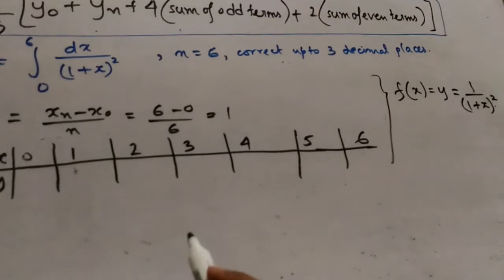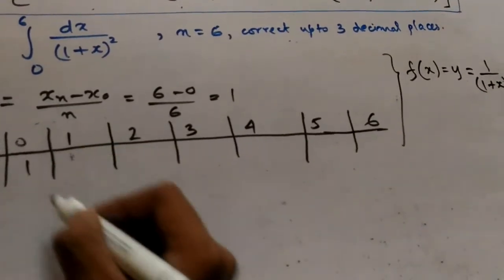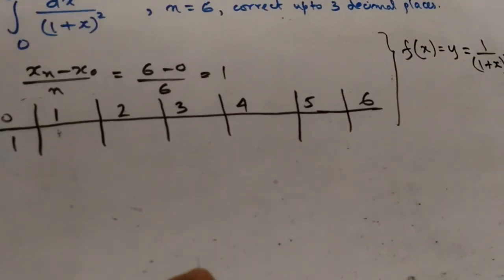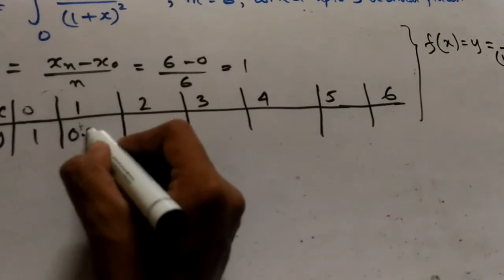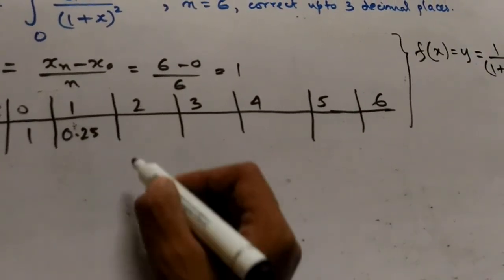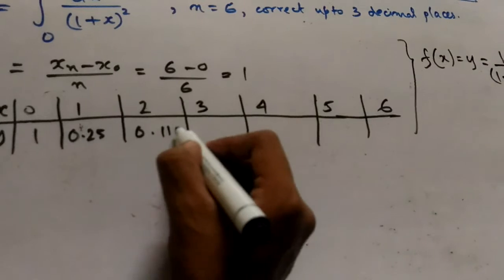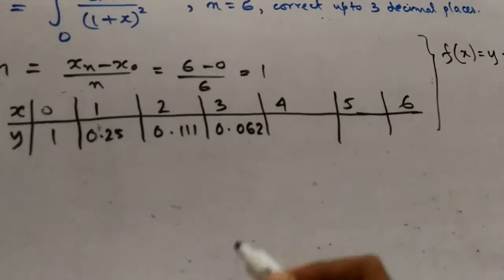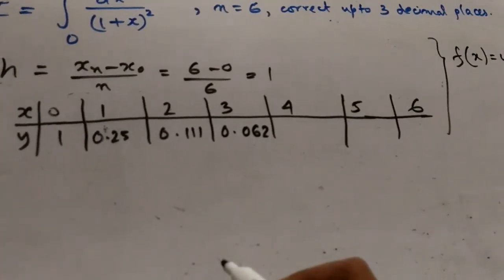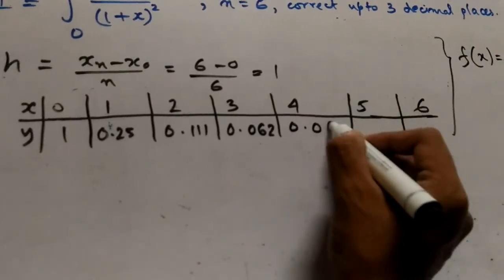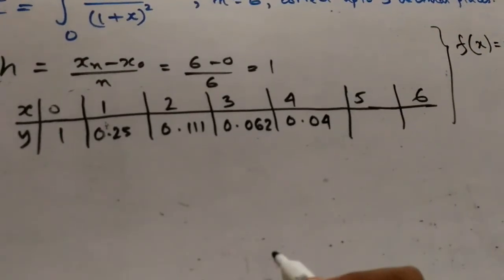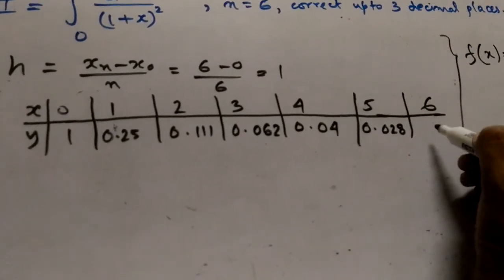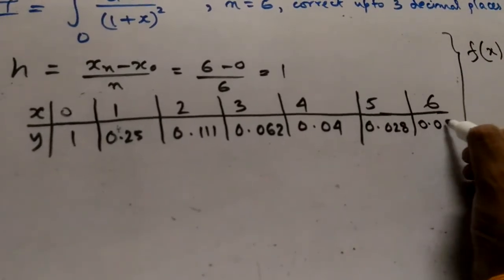So putting x equals to 0 in the f(x) we get 1. Putting x equals to 1 we get f(x) equals to 0.25. Putting x equals to 2 we get 0.111, x equals to 3 we get 0.062, putting x equals to 4 we get f(x) equals to 0.04.